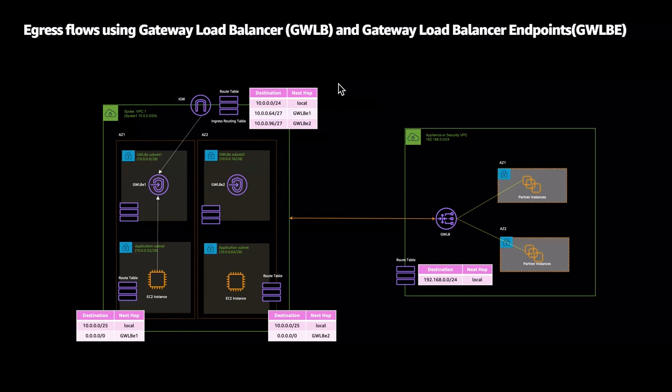As the EC2 instance tries to egress out to the internet, we route all traffic to the Gateway Load Balancer endpoint, which sends traffic to the Gateway Load Balancer. The appliance instances inspect this, send it back to Gateway Load Balancer, out of the internet gateway, and follows a similar path back where ingress routing enables traffic to hit the Gateway Load Balancer endpoint before it makes its way back to the application instance.